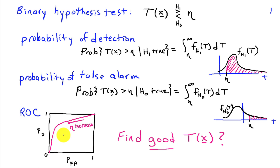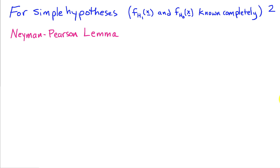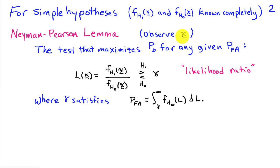Of all possible tests, we would like the receiver operating characteristic to be as close to the northwest corner as possible, because that means perfect detection with zero false detections. In general, it's very difficult to identify an optimal test procedure. But in the case where the hypotheses are simple — that is, when the probability density functions of the data under hypothesis H1 and H0 are known completely — we have something called the Neyman-Pearson Lemma that tells us what the optimal test should be.